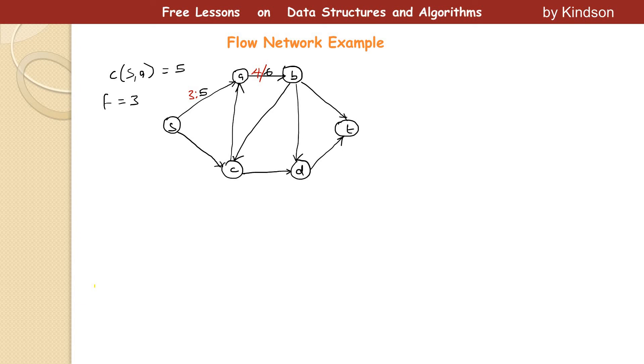So the first number is the lesser number, in case if there's anyone that is less, is the flow and c is the capacity. And six here, for this example, is the capacity. So that is just explaining what a flow network is.